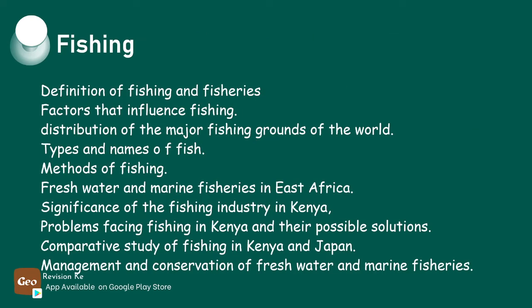After defining fishing and fisheries, we can now explain the factors that influence fishing, account for the location of the major fishing grounds of the world, identify types and names of fish, and describe methods of fishing. We will also discuss freshwater and marine fisheries in East Africa, assess the significance of the fishing industry in Kenya, discuss the problems that face the fishing industry in Kenya and their possible solutions, compare and contrast fishing activities in Kenya and Japan, and finally look at ways and means of managing and conserving freshwater and marine fisheries in our localities.